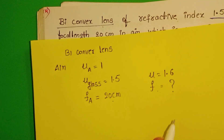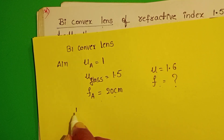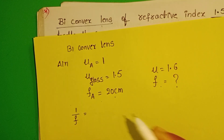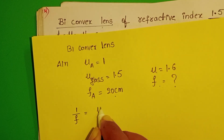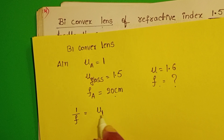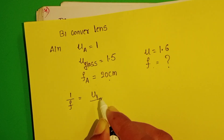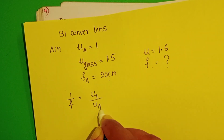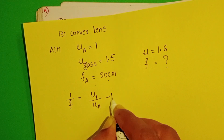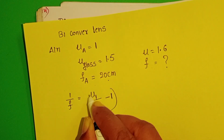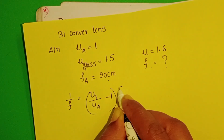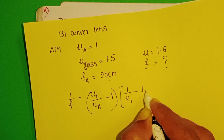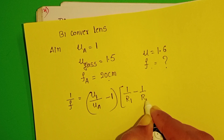Take the lens maker's formula: 1/F equals (refractive index of the lens / refractive index of the given medium − 1) multiplied by (1/R1 − 1/R2).